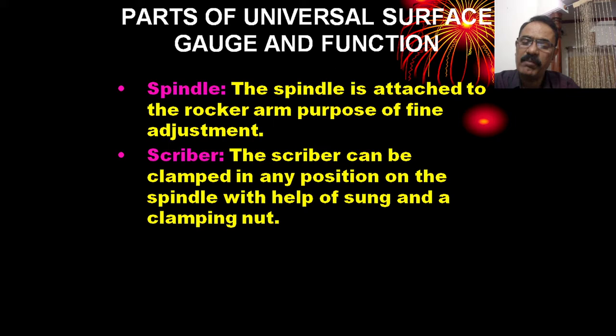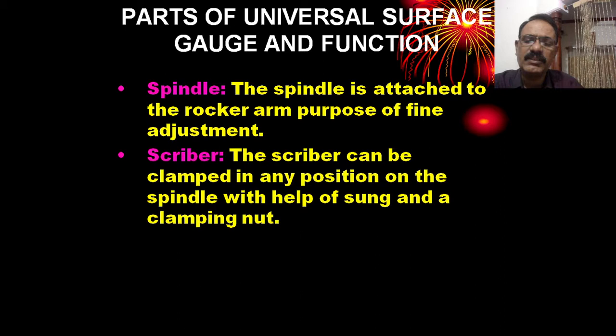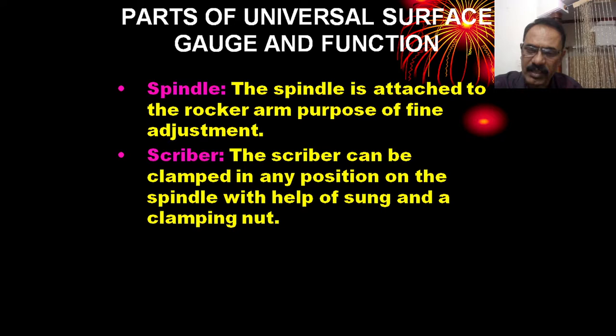Another important part is the scriber. The scriber can be clamped in any position on the spindle with the help of the snug and clamping nut. The scriber can be locked in any position to scribe — that means to draw a line.